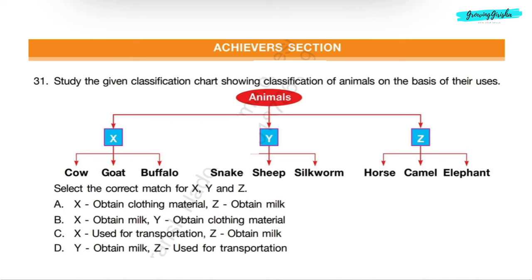Achievers section. Question 31: Study the given classification chart showing classification of animals on the basis of their uses. Select the correct match for X, Y and Z. Cow, goat and buffalo in X category are used for obtaining milk. Snake, sheep and silkworm in Y category are used for obtaining clothing material. Horse, camel and elephant in category Z are used for transportation. So, on the basis of their uses, option B will be the correct answer.